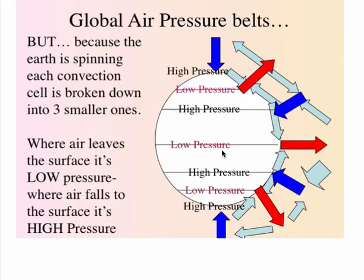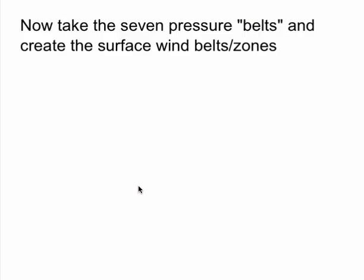So let's add in our pressures. Air is leaving — low pressure. Air is being added — high pressure. Air is leaving — low pressure. Air being added — high pressure, and so on. Those are our generic pressure belts that are approximately on Earth at those locations throughout the year.